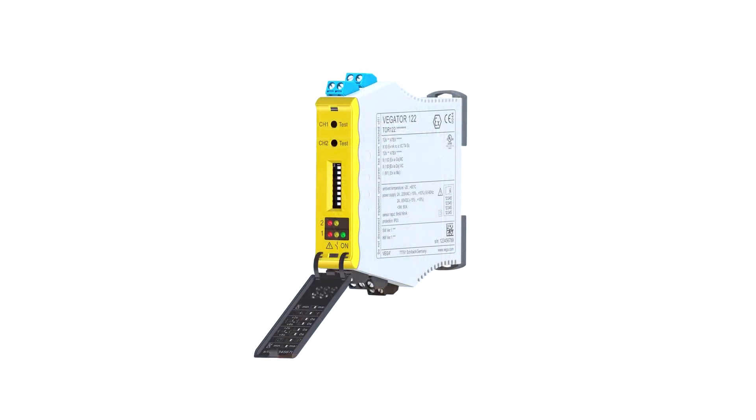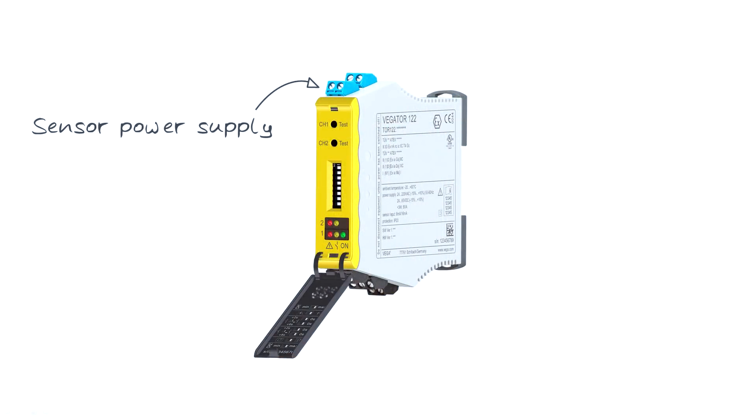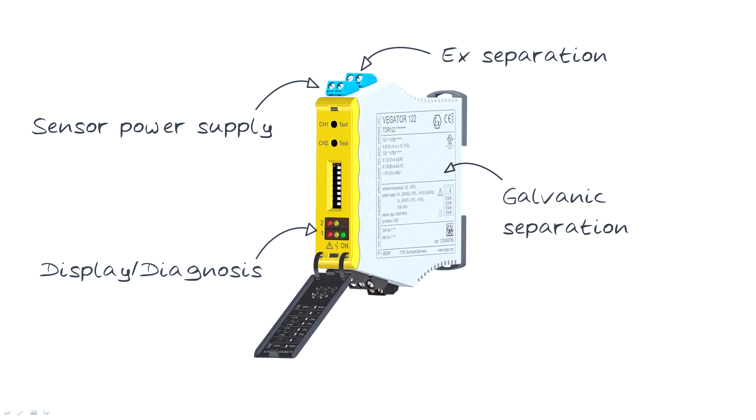First, let's have a look at the task of a signal conditioning instrument. First of all, it supplies the sensor with power and in case of hazardous areas it can also be used as an Ex separator. The inputs and outputs as well as the supply voltage are galvanically isolated. The instrument also provides local display and diagnostic options as well as additional functions such as the function test.